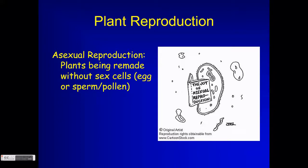Welcome to this presentation on plant reproduction — specifically asexual reproduction. In class you have learned about sexual reproduction of plants. When we talk about plant reproduction and human reproduction we're always making comparisons, but there's one type of reproduction that plants do that humans cannot, and that type is asexual. Asexual means that plants can produce copies of themselves without using sex cells.